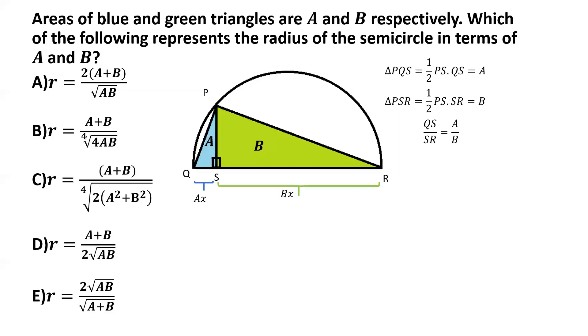And similarly, we can take SR as capital B multiplied by X. So X is basically the constant of proportionality. Because if QS and SR are in the ratio A to B, then we can express QS as AX and SR as BX, where X is some parameter that we are yet to determine.